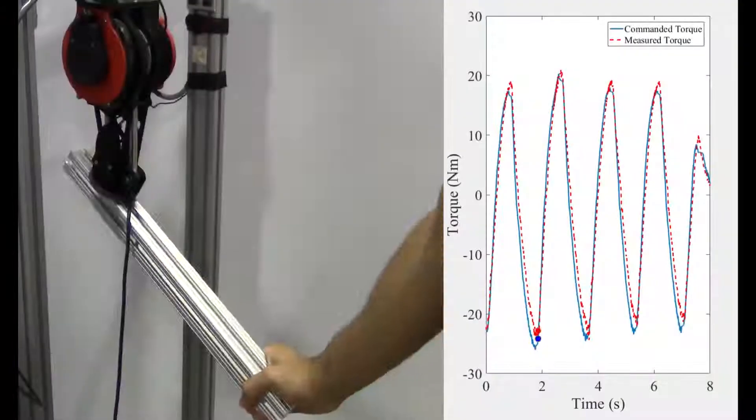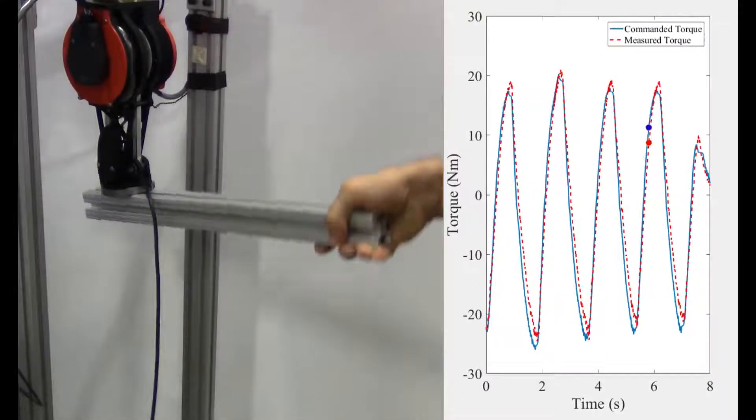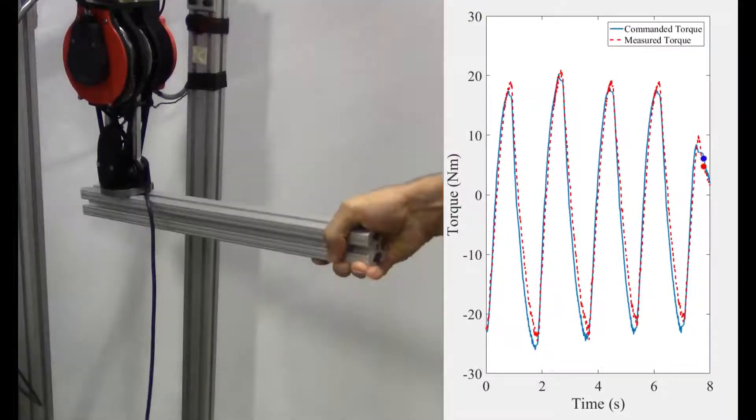Lastly, we see that the intrinsic impedance and unmodeled dynamics of the actuator are sufficiently small to control joint impedance without torque sensor feedback.